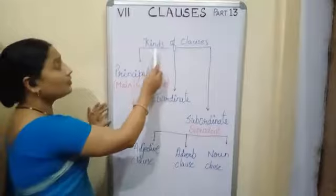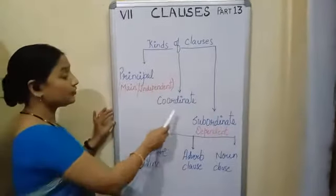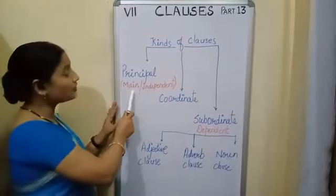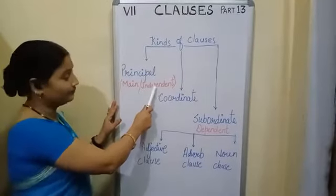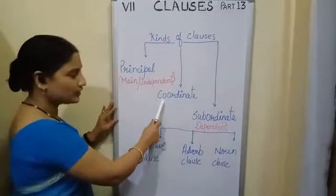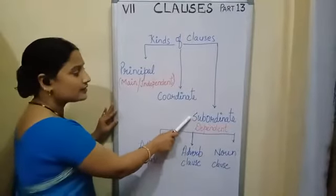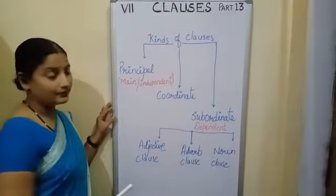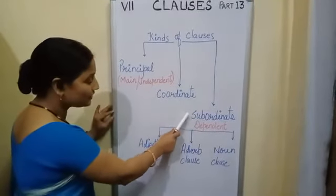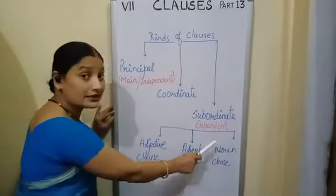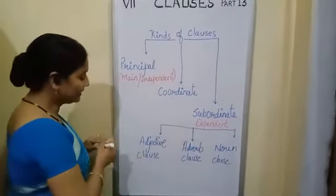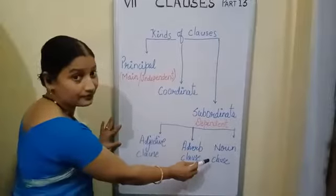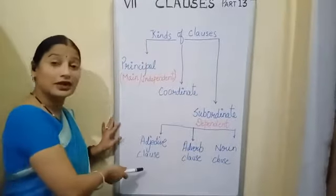Clauses can be divided into three kinds: principal clause, which is also called main clause or independent clause; then coordinate clause; and then subordinate clause, which is also known as dependent clause. This subordinate clause can be further divided into three sub-kinds: adjective clause, adverb clause, and noun clause. This is the chart of all kinds of clauses.